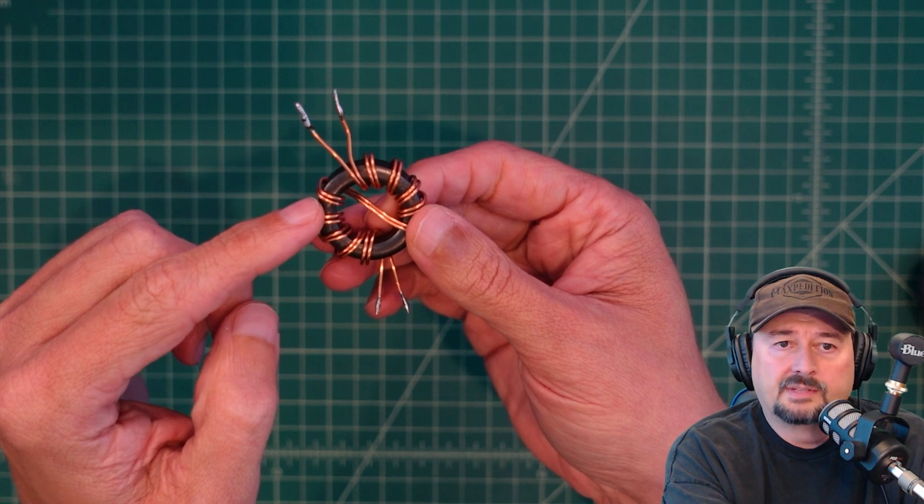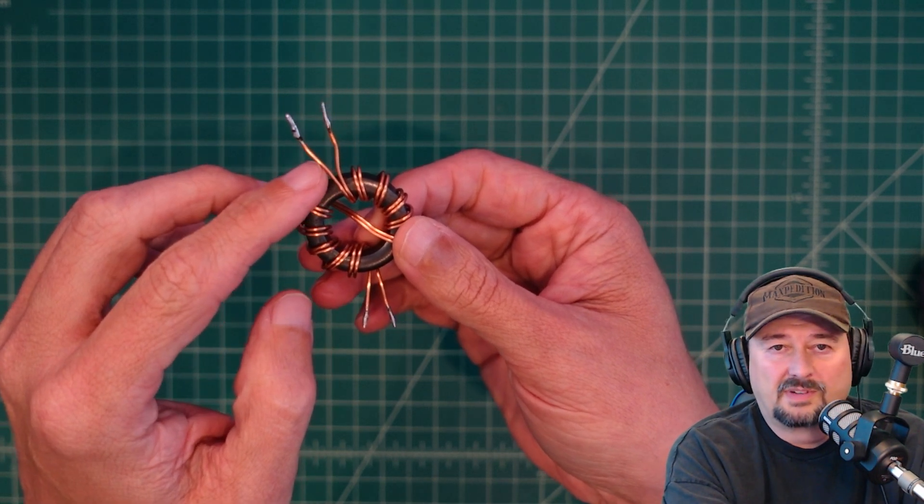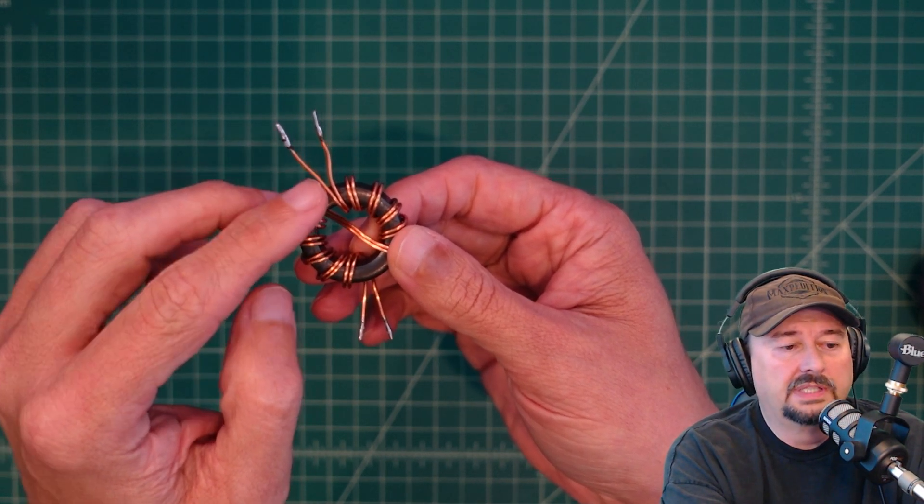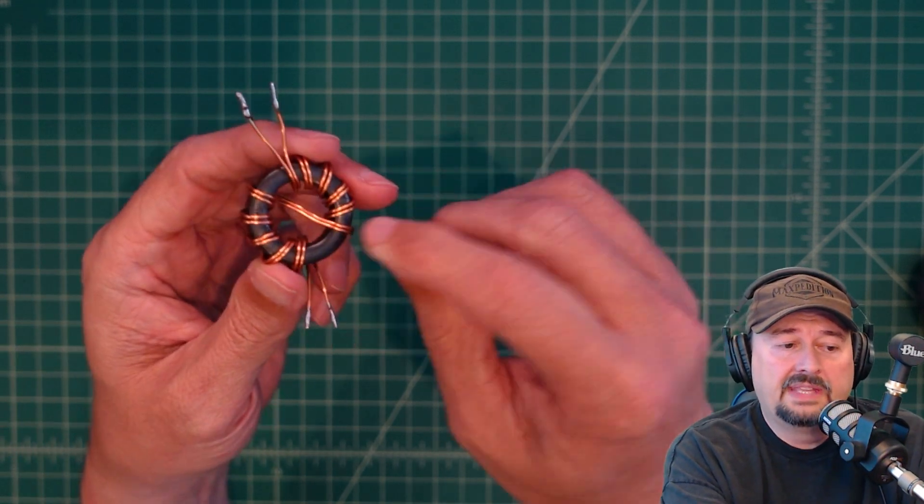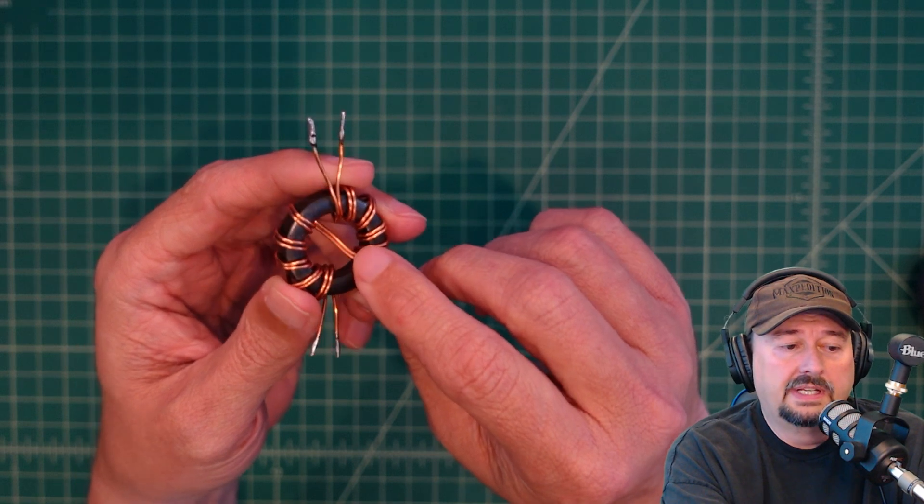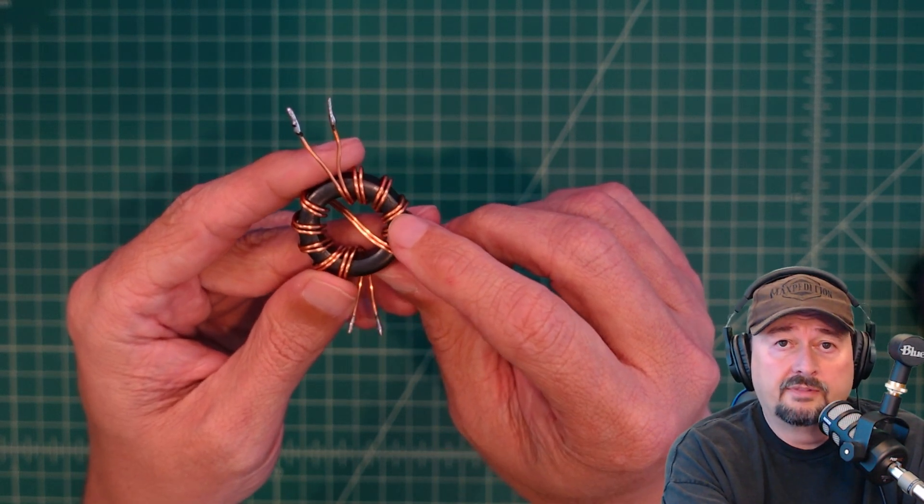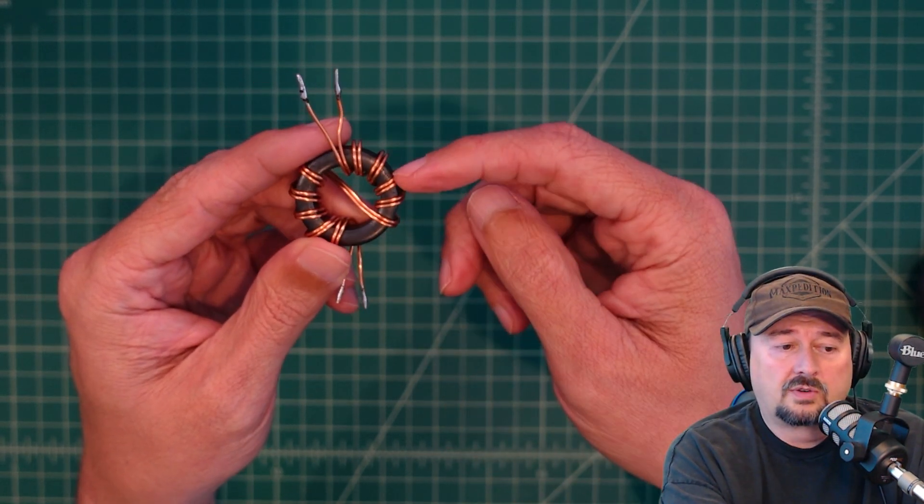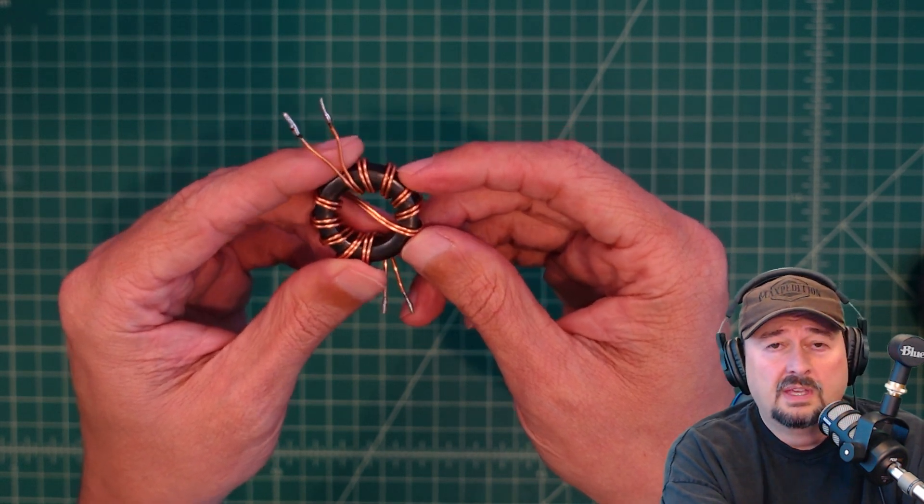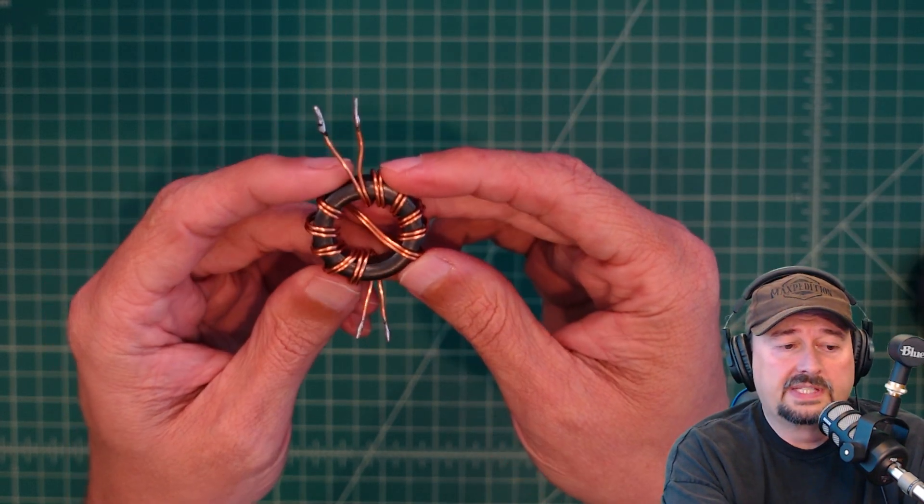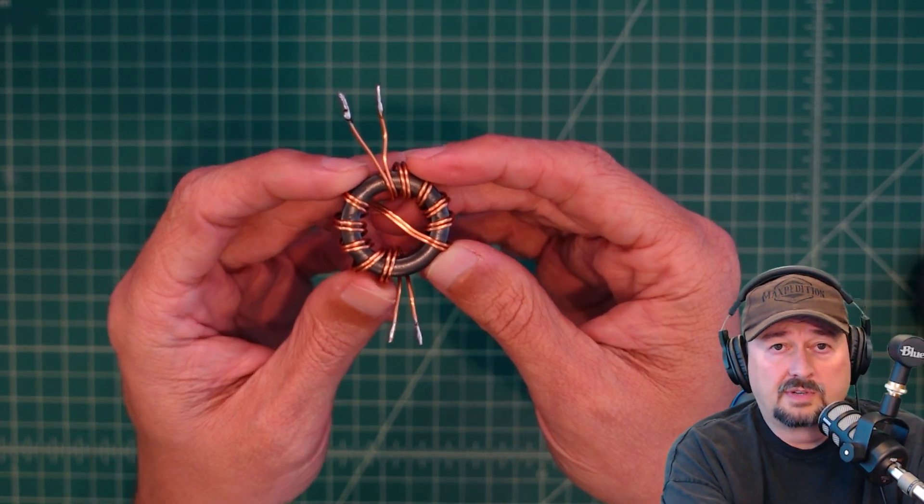Now this is a rather simple one. I think this is somewhere around 18 gauge enamel coated copper solid core wire. And this is a ferrite toroid. It is an FT-114. So that means across the diameter is 1.14 inches and it's a mix 43, which is a pretty common core that we see for these types of applications in amateur radio.